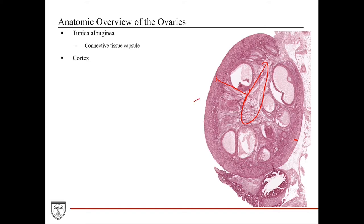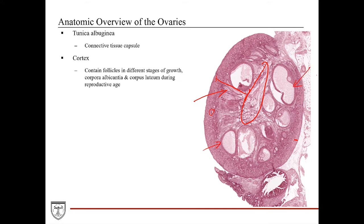The cortical layer contains numerous follicles, which are the oocytes surrounded by protective ovarian stromal cells. During the reproductively active age, this cortex will contain follicles that are in various stages of growth, with diverse histology of various sizes and shapes. In addition to various follicles, we may also see some corpus luteum, which is the leftover follicular cells after the follicle has ovulated, that release progesterone and estrogen.